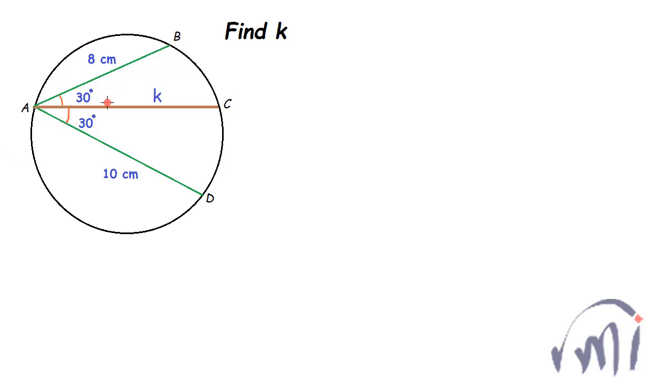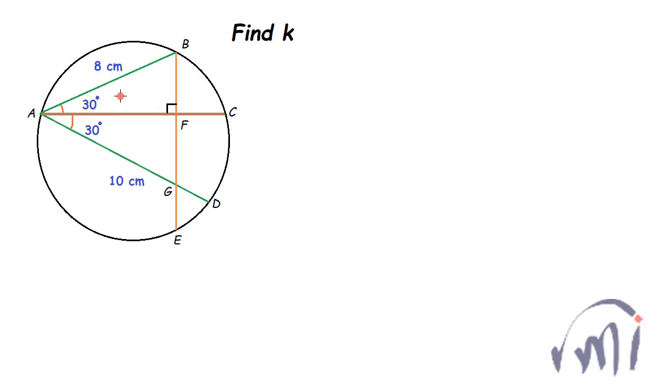So how to solve it? First what I have done is I have drawn a perpendicular on line AC from point B. Then if I see triangle BAF, this angle is 90 degrees, this angle is 30 degrees.